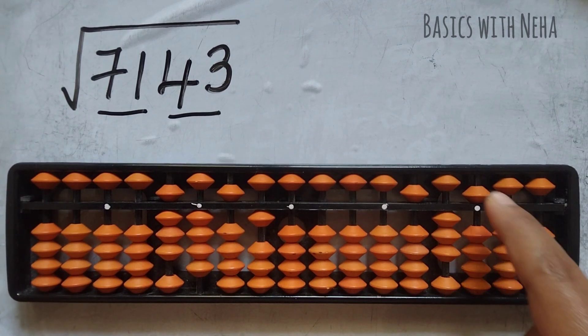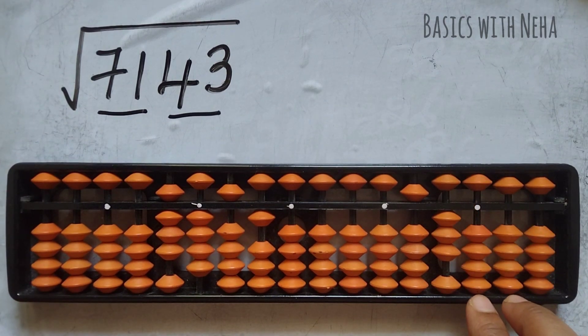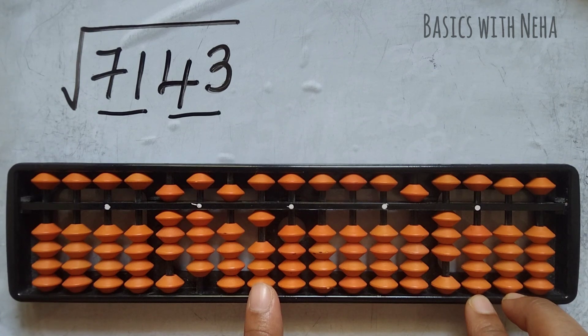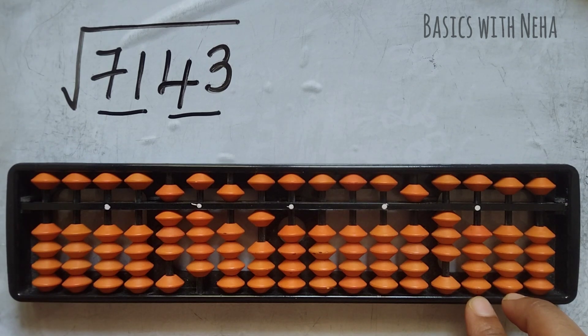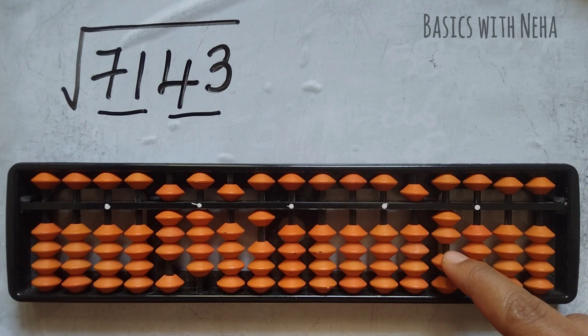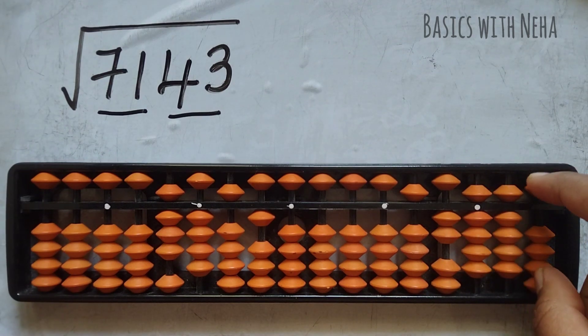Now here, 1 square is 1. Then it will be 0.5. So how do I place 0.5? So to place 0.5, it will be here, 0.5.